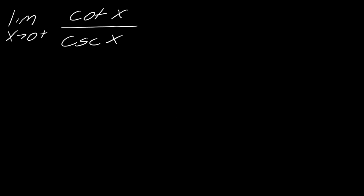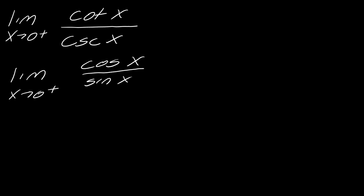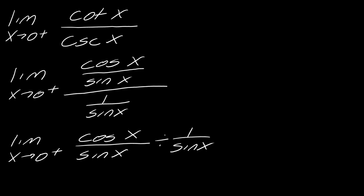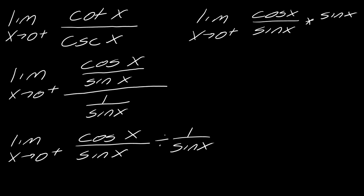Let's express the top and bottom functions in their sine and cosine forms. Cotangent x is cos x over sin x, and cosecant x is 1 over sin x. So the expression becomes (cos x / sin x) divided by (1 / sin x). Flipping that second fraction, we can see that the sin x terms cancel, leaving just the limit as x approaches 0 from the right of cos x, which equals 1.